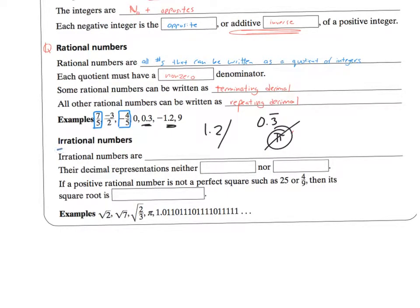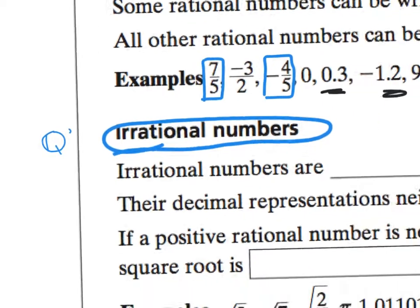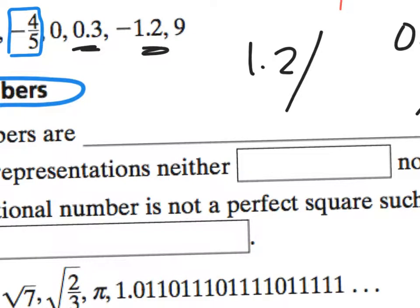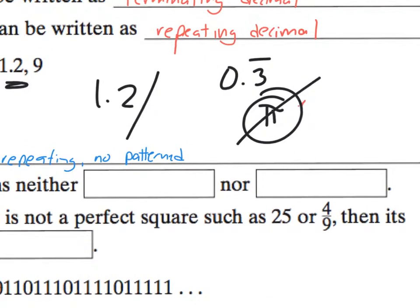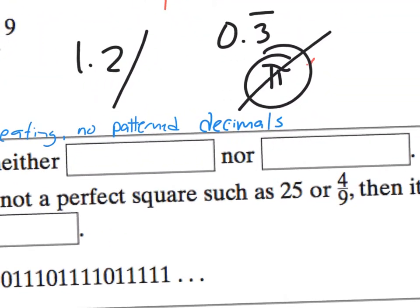And the last subset of numbers is called the irrational numbers. And, although debatable, the Q is used with an apostrophe which reads Q prime. So irrational numbers are non-repeating, no-patterned decimals. So, as we said, their decimal representations are neither repeating or ending, also known as terminating.